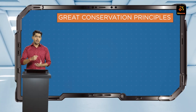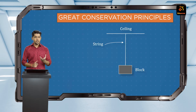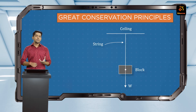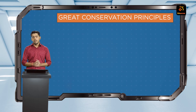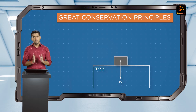If you tie a string to a block and hang it from a ceiling, the block remains hanging. On one end, gravity is pulling it down, but it's not going down. So I can conclude that the string must apply some force on it. Similarly, if I keep a block on a table, gravity is attracting the block, but it's still not going down. So the table must be pushing upwards on the block.